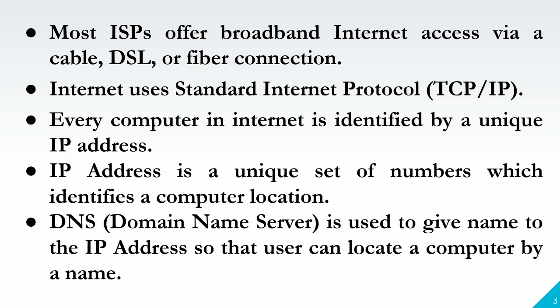The internet uses standard internet protocol, also known as TCP/IP. Every computer on the internet is identified by a unique IP address, which is a unique set of numbers identifying a computer's location. A special computer called DNS — domain name server — is used to give a name to the IP address so that users can locate a computer by name. Internet is accessible to every user all over the world, and each IP address is different.